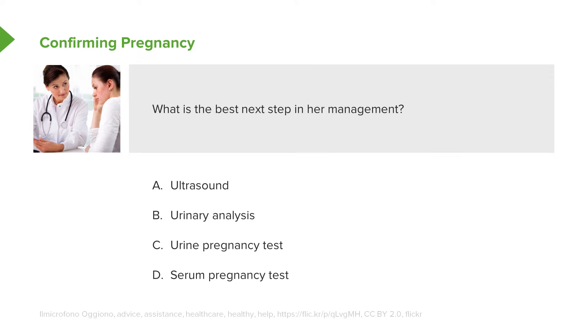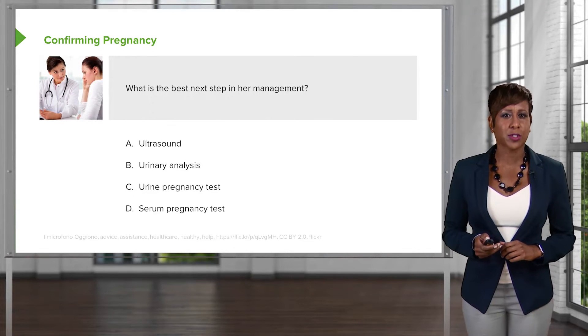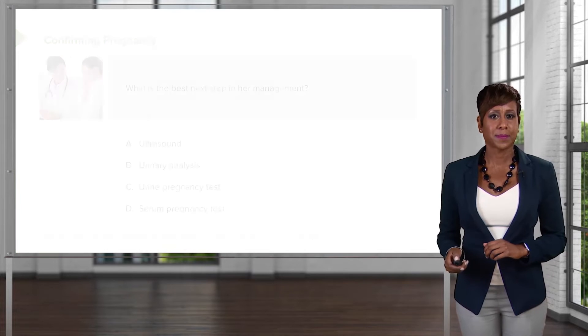What is the next best step in her management? A. Ultrasound. B. Urinary analysis. C. Urine pregnancy test. Or D. Serum pregnancy test. Let's go through the lecture to figure out what the answer is.